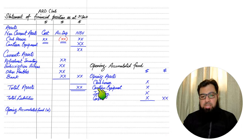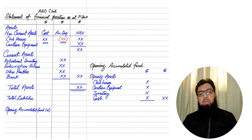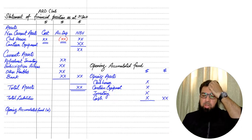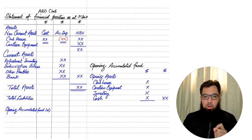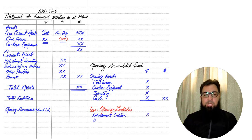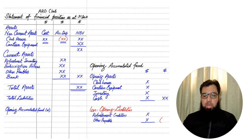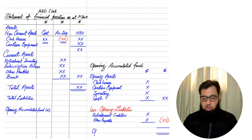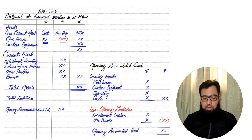Cash should also be the opening figure. All of these are opening assets. Remember that for canteen equipment or any other asset, we need the net book value — if we are given cost and provision for depreciation, we deduct provision for depreciation from cost to get net book value. After assets, we deduct opening liabilities: refreshment creditors, trade payables, other payables, and any loans. Opening assets minus opening liabilities gives us the opening accumulated fund.